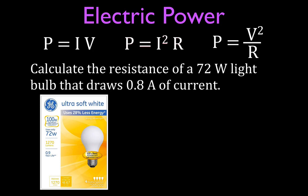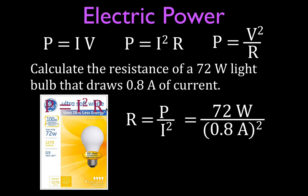Last example here. Back to light bulbs. We want to know, calculate the resistance of a 72-watt light bulb that draws 0.8 amps of current. We want to calculate the resistance, so we're going to use this equation. We know the power, we know the current, so therefore we're going to use this equation. That is P is equal to the I, the current squared, times R. We want to know the resistance. Solve that for the resistance, the power divided by the current squared. Plug our values in. 72 watts, 0.8 amps squared, which is 0.64, and we get that the resistance of that light bulb is 113 ohms.